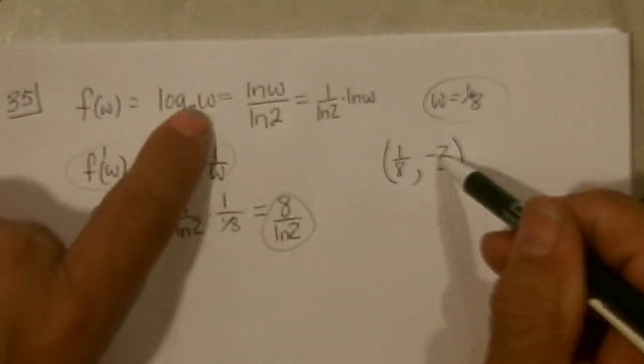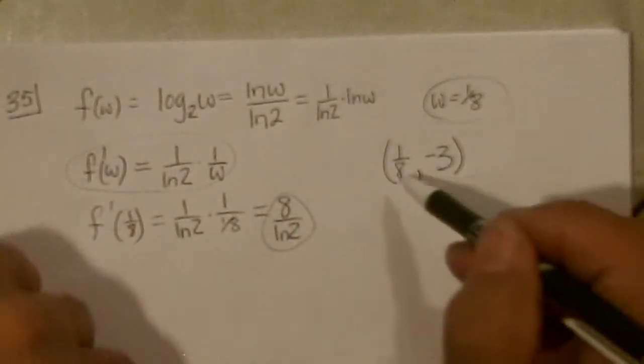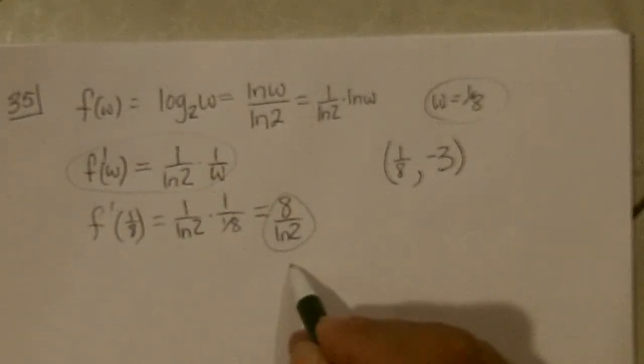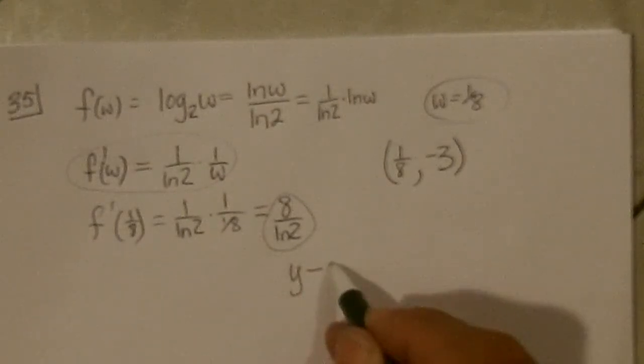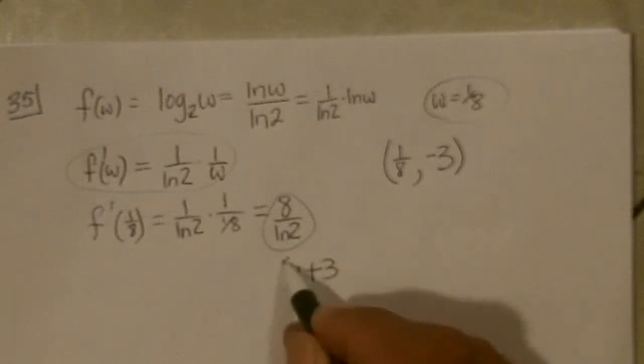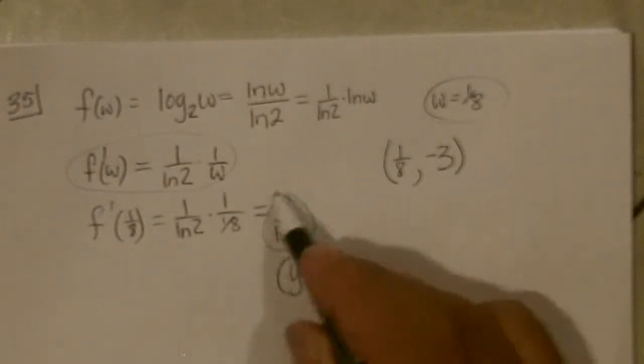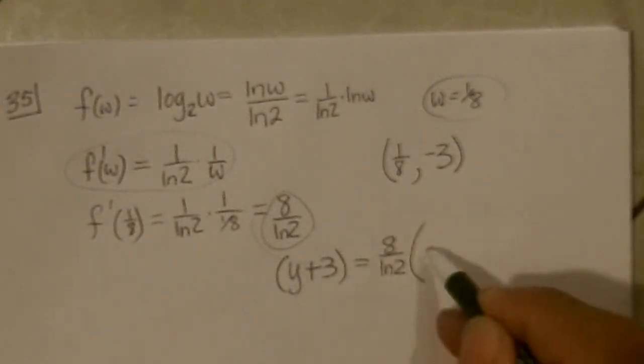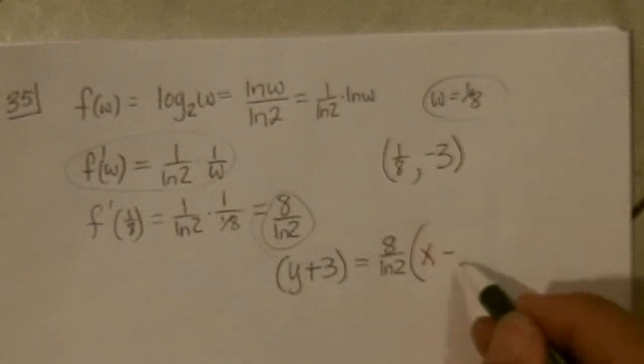2 to the negative 3 power is 1 eighth. So our equation of the tangent line would be Y minus a minus 3, which means Y plus 3, equals slope is 8 over ln 2 times X minus 1 eighth.